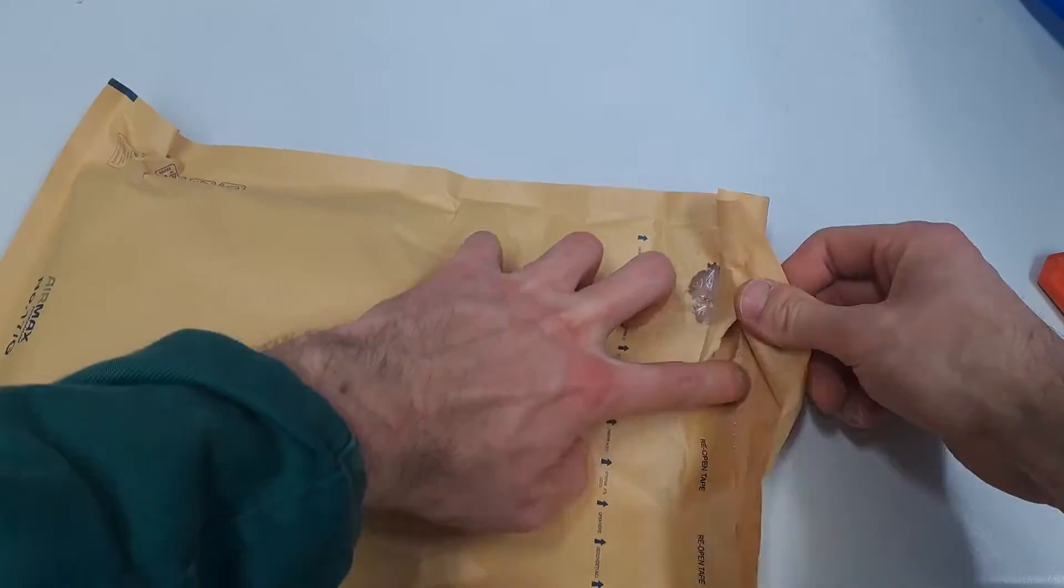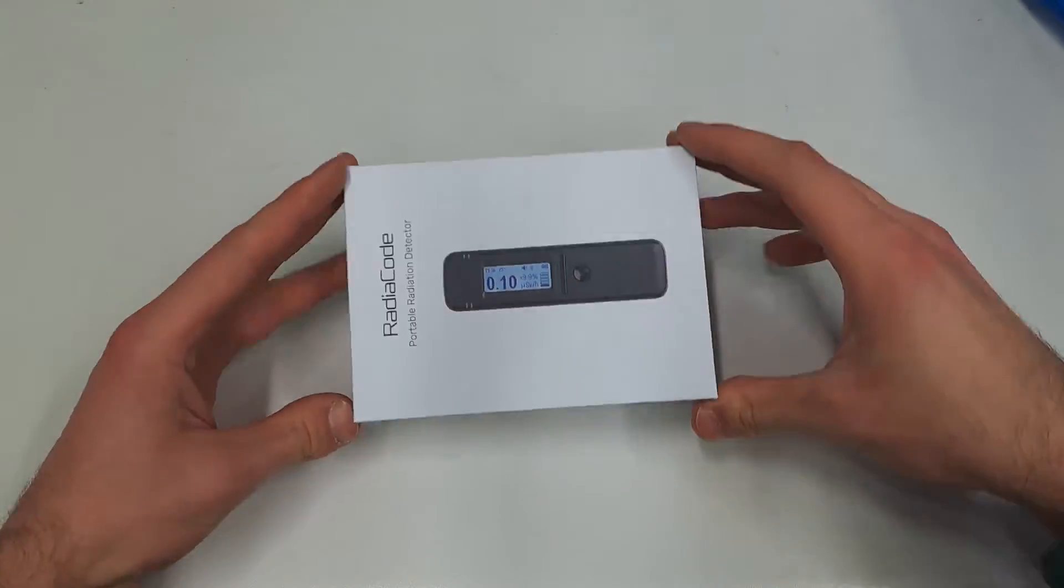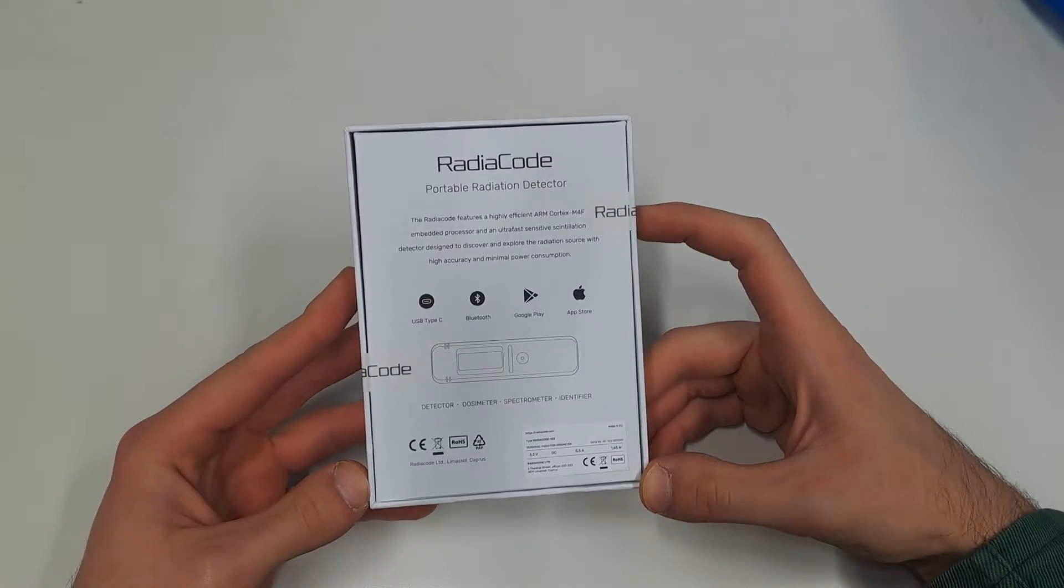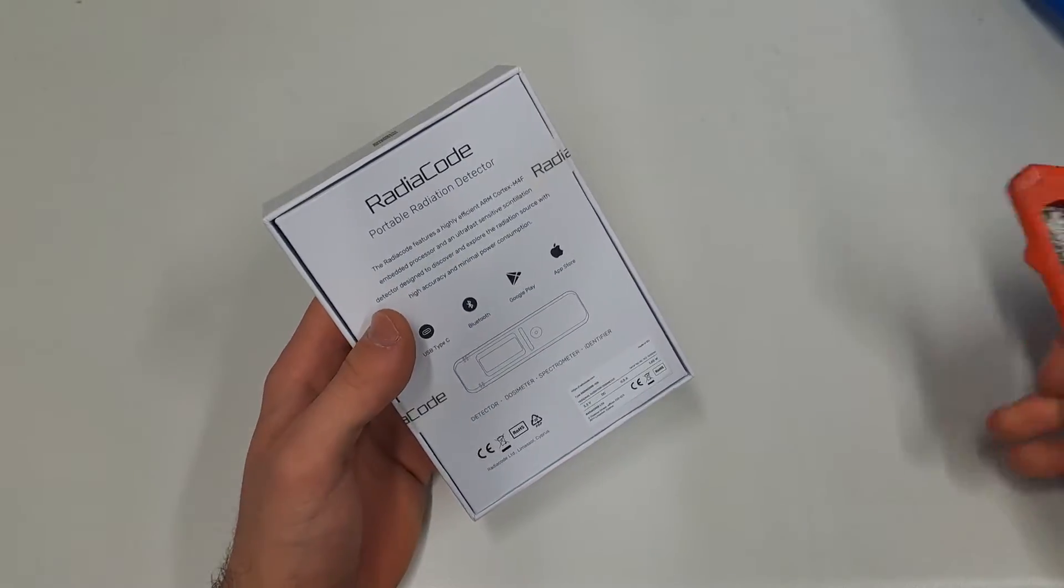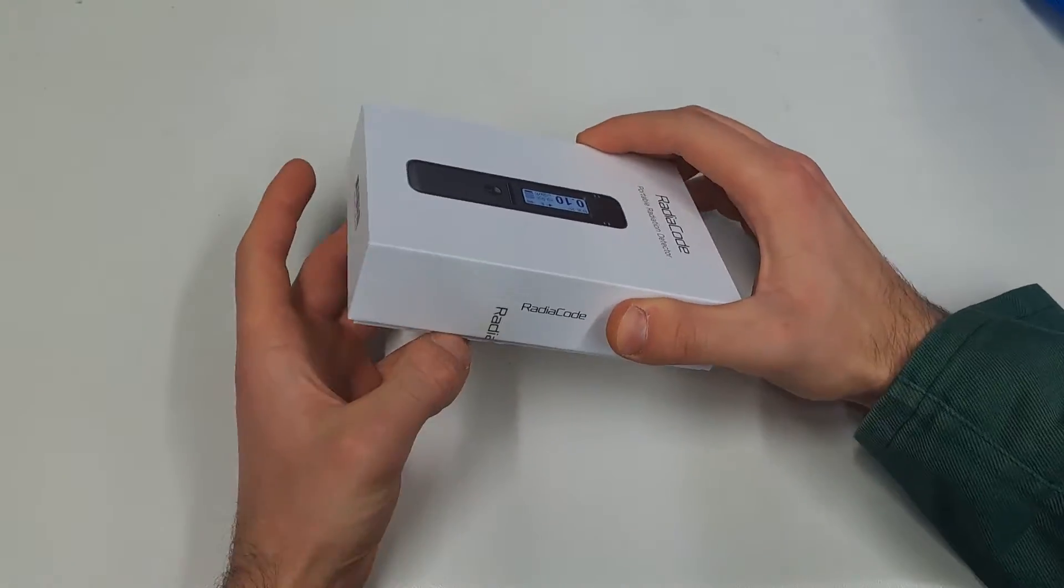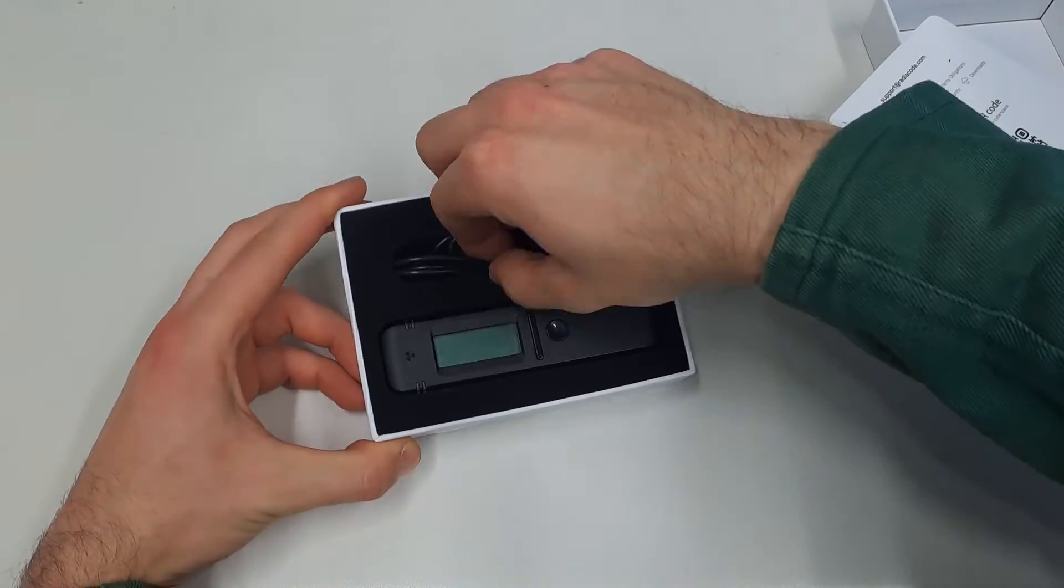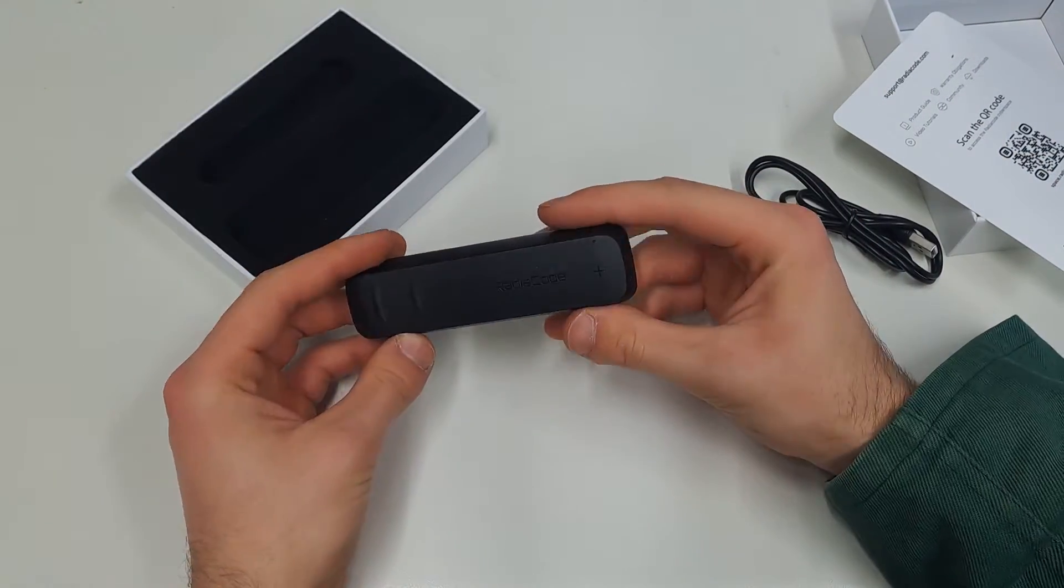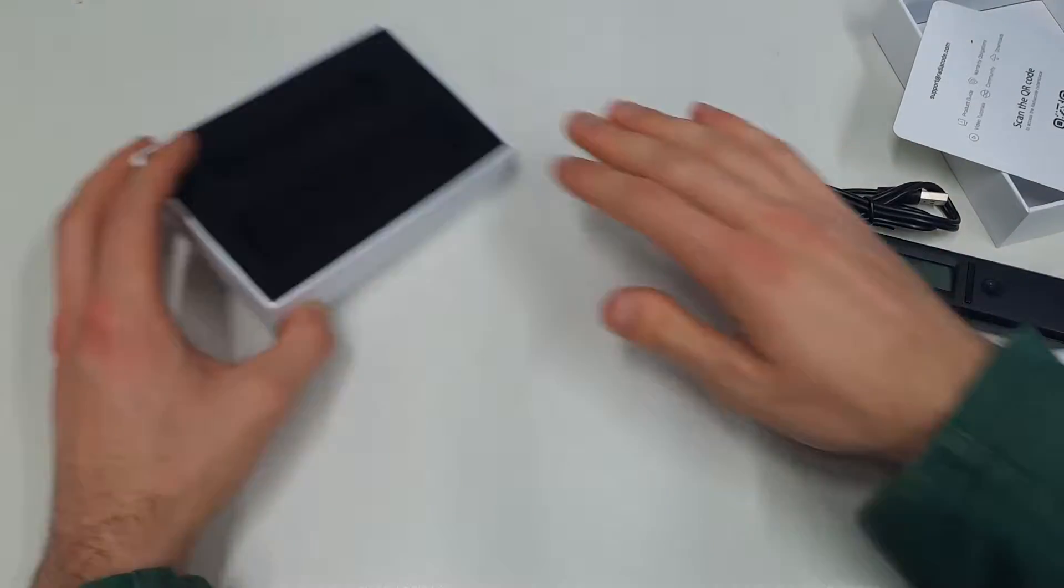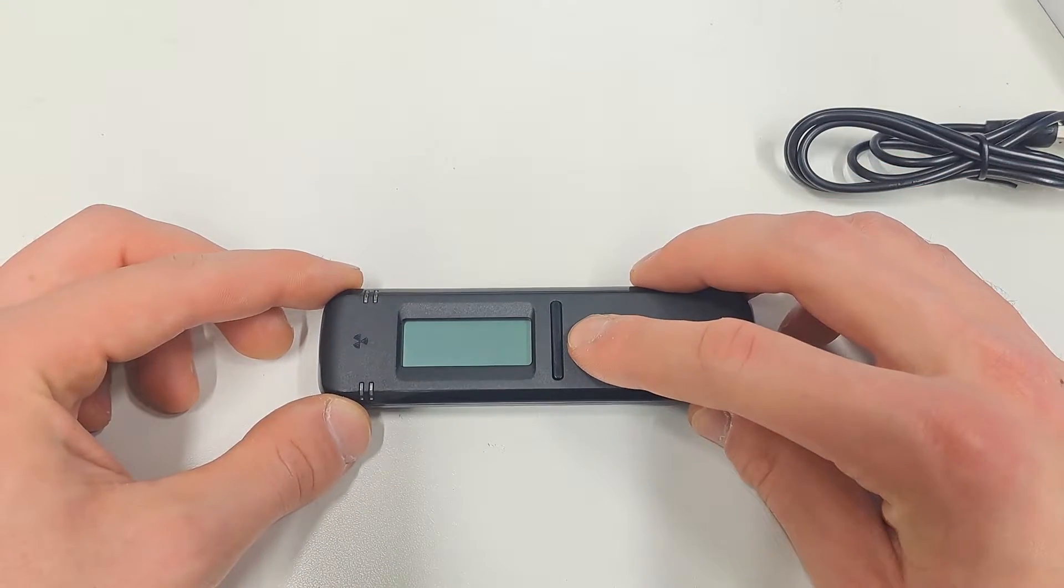We got a package from Radiacode. I was given the Radiacode 103 by them as a gift and this video was made because it's the go-to device among most hobby nuclear chemists and radiation enthusiasts. The English channel requested that I compare this device to our laboratory equipment. I won't be able to cover all of its functions in one lifetime, so in this video I will prioritize the dose rate and the gamma spectrum function.